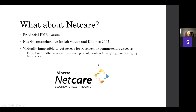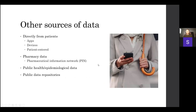Other sources of data include information directly from patients via apps, medical devices, or patient self-entry. The Pharmaceutical Information Network, or PIN, in Alberta — which is what NetCare draws from — contains essentially every prescription filled within Alberta and generates an automatic active medication list for every patient, which is reasonably accurate and very helpful. There are also lots of excellent and growing public data repositories that can help you get around many issues with data access.